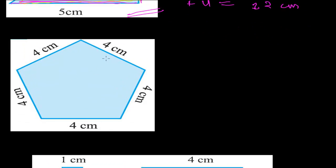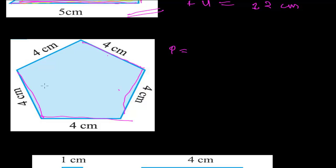Now let's find out the perimeter of this — it's a regular pentagon, with five sides. Whether it's a regular pentagon, hexagon, heptagon, or octagon, we don't care. We only need to know that to find the perimeter of any object we just have to add all the boundaries. So here also we'll be adding all sides one by one.